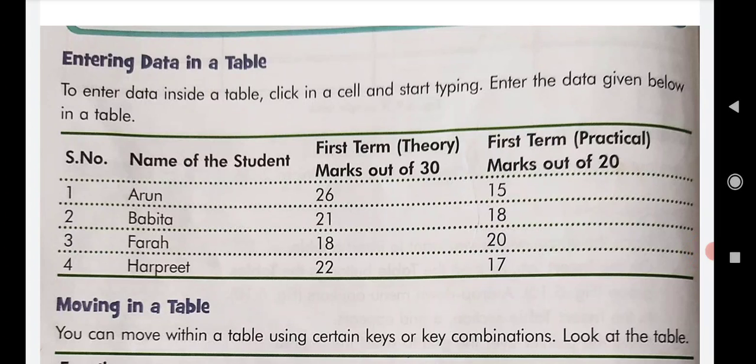First, entering data in a table. To enter data inside a table, click in a cell and start typing. We have made columns for serial number, name of the students, first term theory marks out of 30, and first term practical marks out of 20.